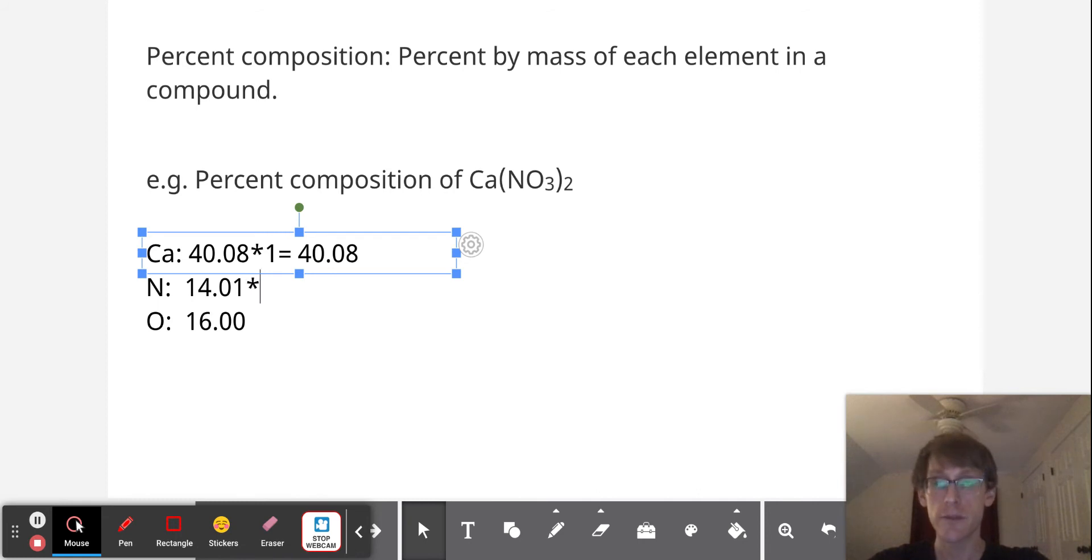And nitrogen, well, there's two of them. So the total mass of nitrogen is going to be 28.02 grams of nitrogen per mole of calcium nitrate.